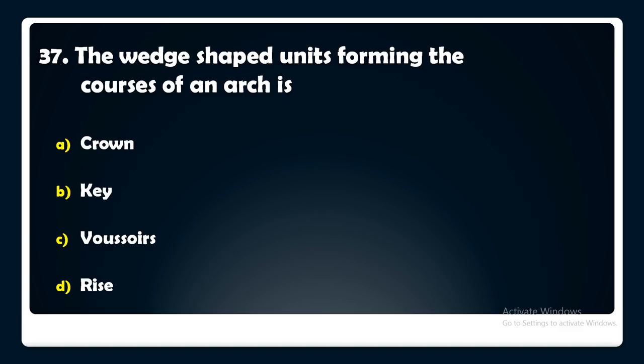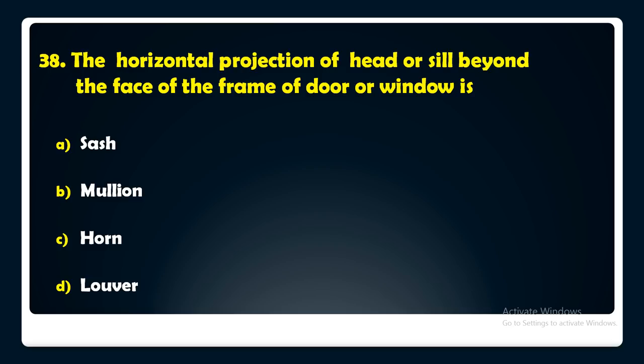The horizontal projection of head or sill beyond the face of the frame of a door or window is called — sash, mullion, horn, or lower? The answer is: it is called a horn.